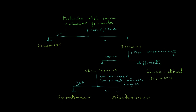This video covers the understanding of different isomers in organic chemistry. We have to deal with different types of isomers like homomers, enantiomers, diastereoisomers, constitutional isomers, and stereoisomers. Today we will discuss the different types of isomers, their origin, and their nomenclature.